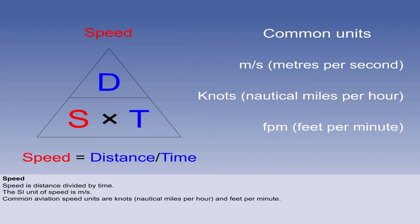The SI unit of speed is metres per second, which is used in aviation in some countries. In the UK and many other countries, horizontal speed is measured in knots, which is nautical miles per hour, and vertical speed in feet per minute.